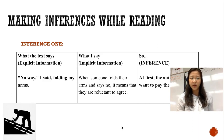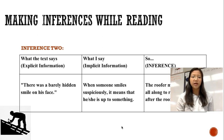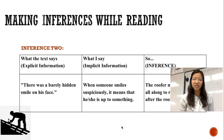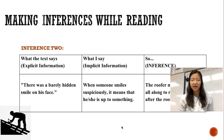Note that we can always make more than one inference from a passage as long as there is evidence. The second inference is: the roofer may have planned all along to raise the price after the roof was torn off. The text says: 'there was a barely hidden smile on his face.' When someone is smiling suspiciously, it usually means he or she is being shady — up to something. That's how we came to the inference that the roofer may have planned all along to raise the price. That's how the 'what the text says / what I say / and so' chart works.